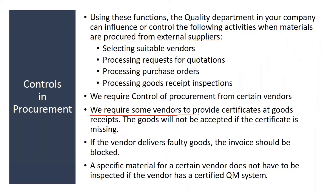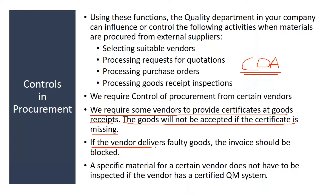Some vendors are required to provide certificates at goods receipt - a Certificate of Analysis (CoA). This must be mandated so that goods will not be accepted if the certificate is missing. Along with the material, the vendor must supply his CoA, and the system should not allow receipt if the certificate is absent. Similarly, if the vendor delivers faulty goods, the invoice should be blocked and the system should not allow payment.